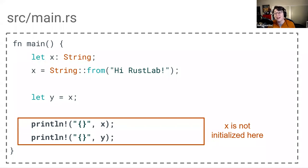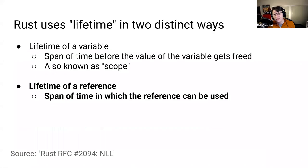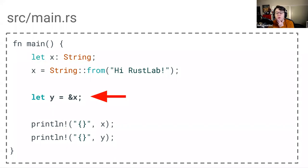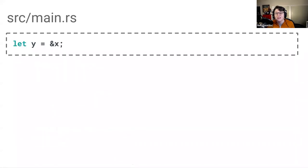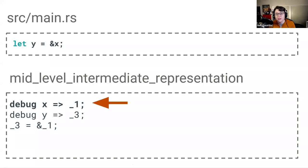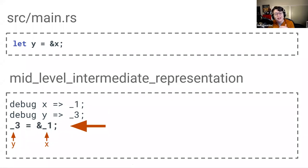The other way Rust uses the term lifetime is to refer to the lifetime of a reference to a value — the span of code in which the reference can be used. Let's look at our corrected code where we assign the value of y to be a reference to the value of x. If we look at the MIR for this line of code, we remember that local underscore one refers to x and local underscore three refers to y. And we see that underscore three is assigned a reference to the value of underscore one.